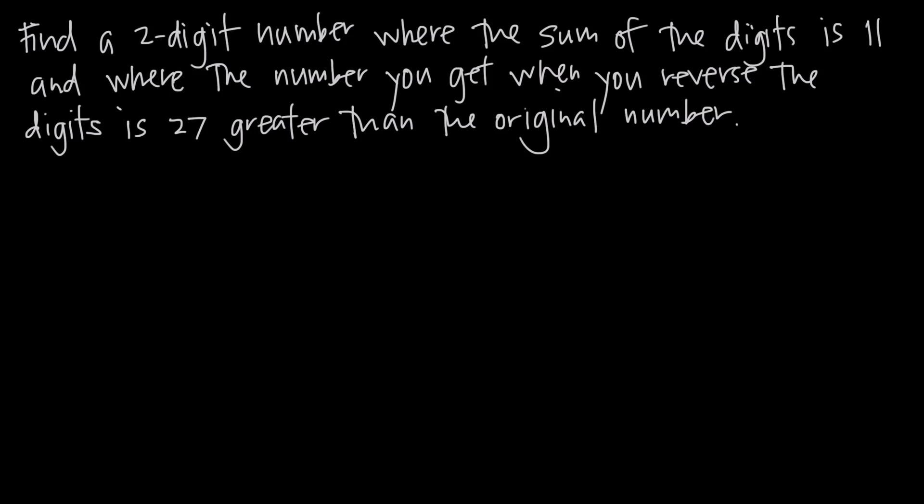So in other words, we're dealing with two things here. We're dealing with the actual number and then the sum of the digits. So for example, if our original number was 12, that would be a two-digit whole number. The sum of the digits would be 1 plus 2 equals 3.